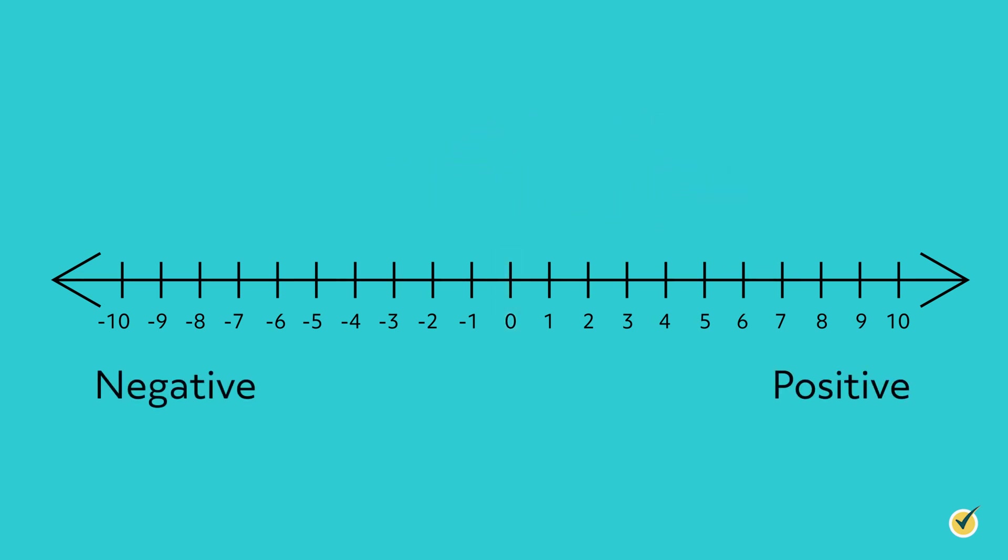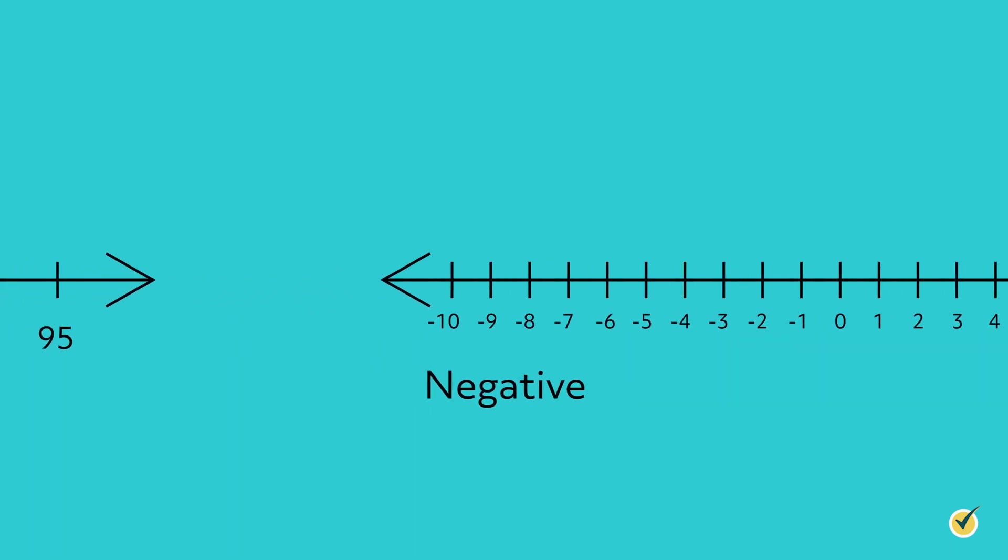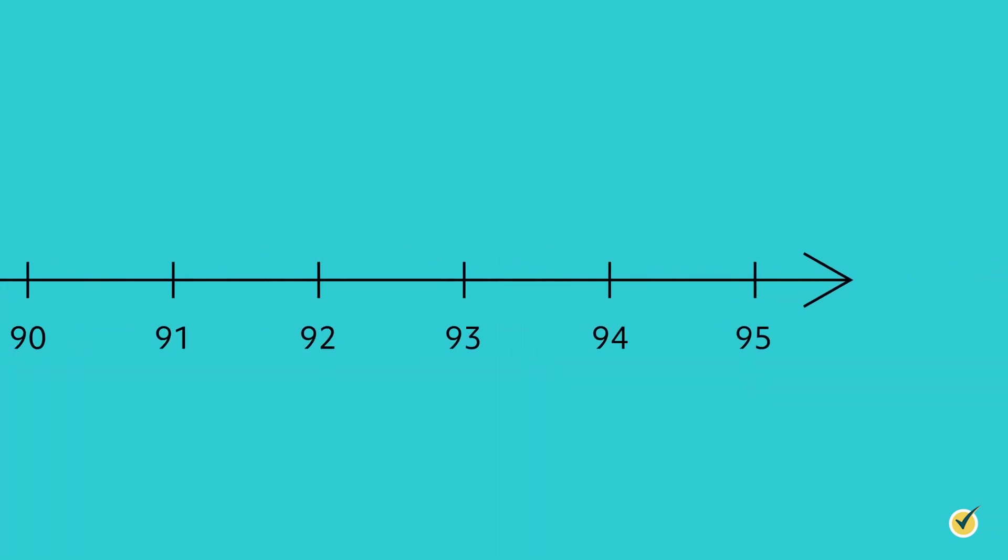Number lines continue infinitely in either direction, so the number line you see is always only part of the whole number line. Because of this, even though 0 is the most important number, it might not show up on your number line.